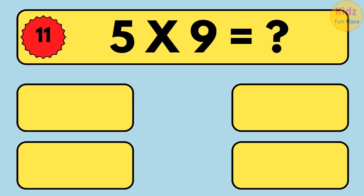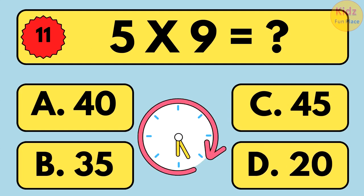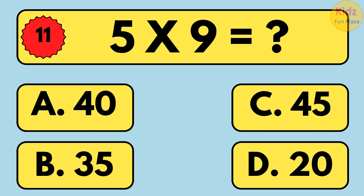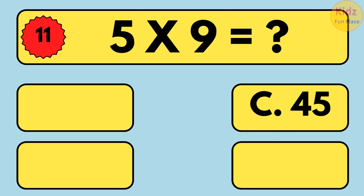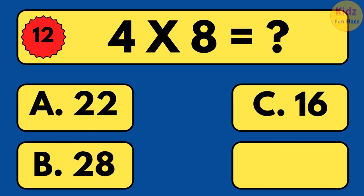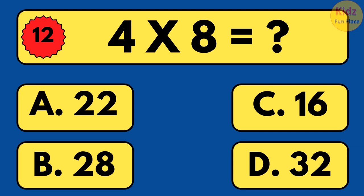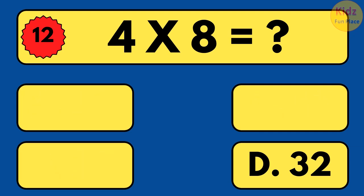5 times 9 is equal to what? 5 times 9 is equal to 45. 4 times 8 is equal to what? 4 times 8 is equal to 32.